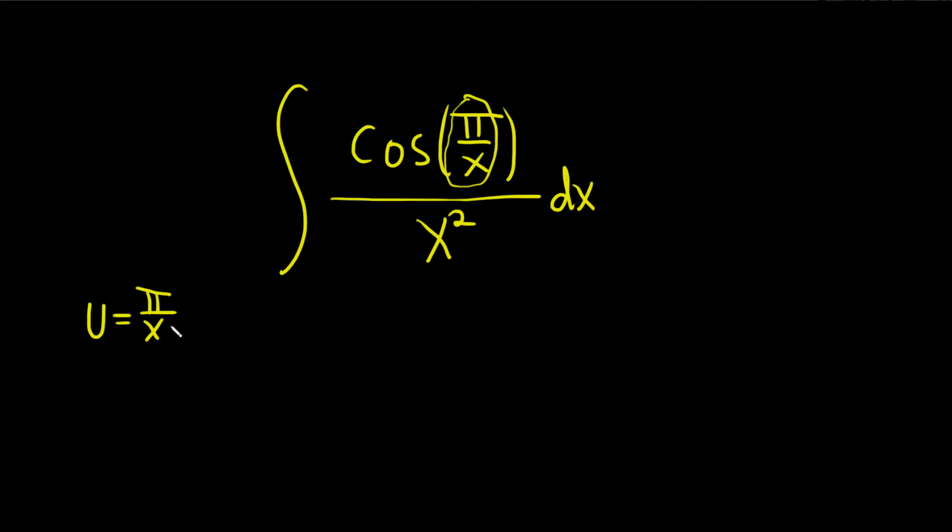So in order to take this derivative, we need to rewrite this. We can bring the x upstairs, so we can write this as pi x to the negative one. Now we're in a good place, and we can take the derivative.